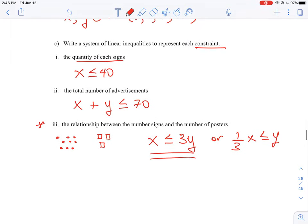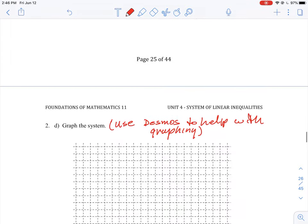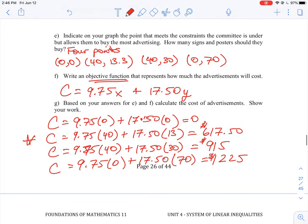So if we look back here, our constraint was that we couldn't buy more than 70 posters, right? So if we - this is going to buy us 653, the other ones will buy us 70, 40 signs and 30 signs and then 0 signs and then 70 posters. So the one that will, even though we're not buying a total of 70 posters, this is still the best choice because it costs the least amount and we are within our constraints here. So this is how you work through a problem from start to finish with one of these.